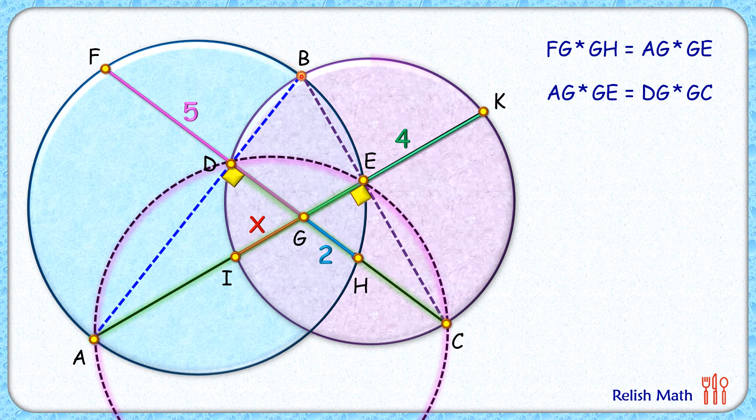In the purple circle, AG times GE equals DG times GC. And we have DG times GC equals IG times GK.